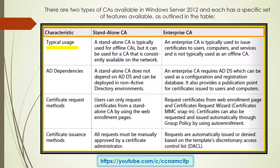The first characteristic is typical use. Standalone certificate authority is typically used for offline certificate authorities. It is offline, but it can also be used for certificate authority that is consistently available on the network. So standalone is basically an offline certificate authority.